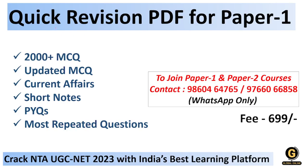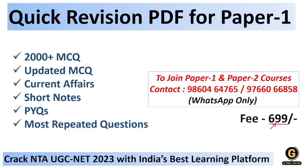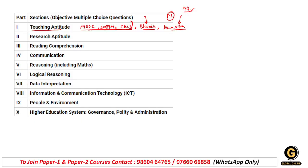Is baar hum Jo UGC NET paper 1 ke smart preparation ke liye quick revision PDF lekar aaye hain, jismein aapko paper 1 ke total 10 units ke 2000 se bhi zyada MCQs milte hain, English medium aur Hindi medium dono languages mein. Exam mein kam samay baaki hai, to aap ek se do baar in MCQs ko revise kar lijiye - as-it-is questions exam mein aa rahe hain. Updated MCQs, current affairs, short notes, previous year questions aur most repeated questions yahan par aapko mil rahe hain. Screen par diye gaye number par WhatsApp se contact karke aap easily accha score kar sakte ho, aur fees sirf ek hi baar pay karni hai.